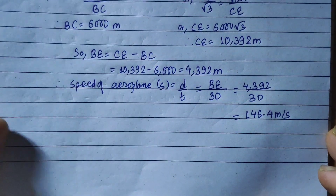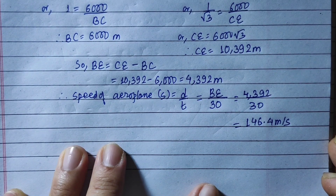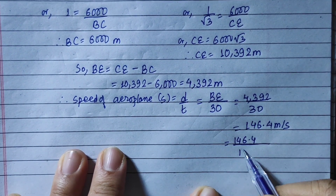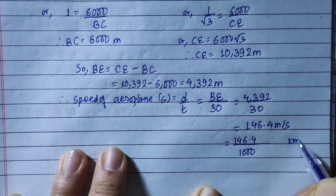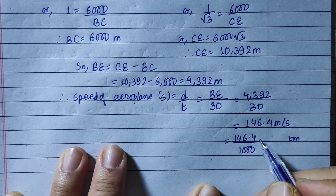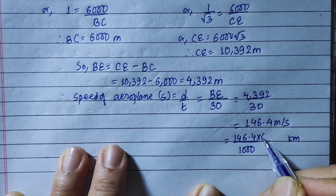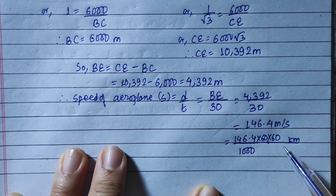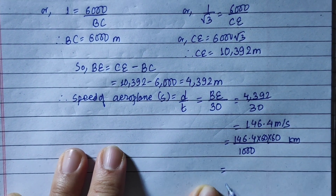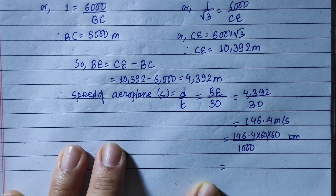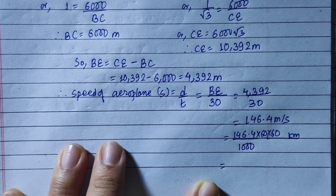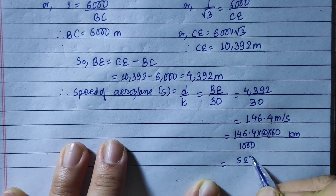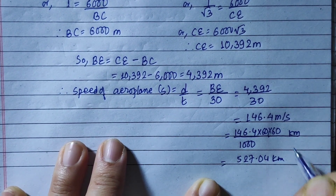We calculate 146.4 meters per second. To convert to kilometers per hour: 146.4 meters per second multiplied by 3,600 seconds divided by 1,000 gives 527.04 km per hour.